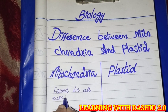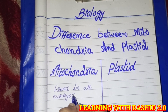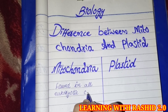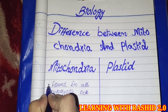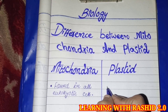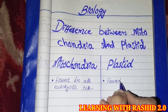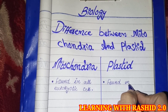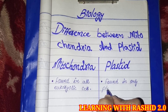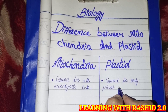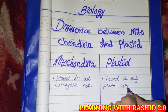Mitochondria is found in all eukaryotic cells. Plastid is found in only plant cells.